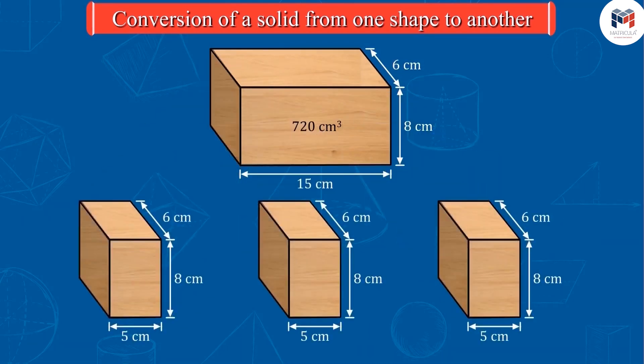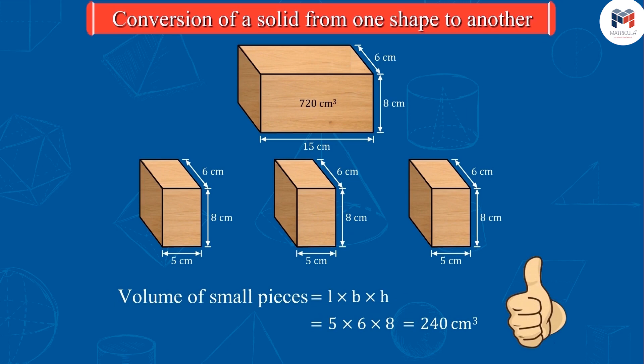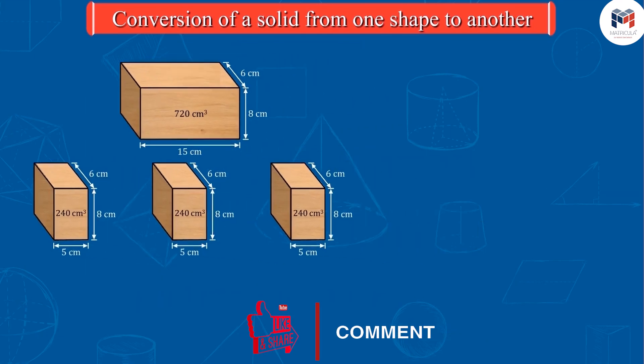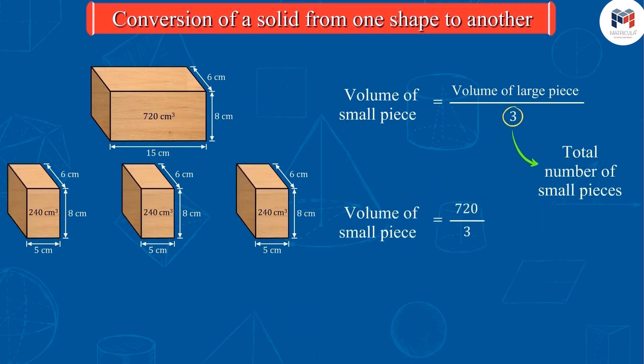If this piece of wood is cut into 3 equal pieces like this, can you find the volume of each small piece? Well done! The volume of each small piece is 240 cubic centimetres. You can see here that the volume of each small piece is equal to one third of the volume of the larger piece.